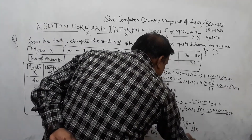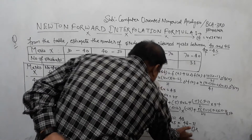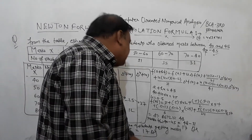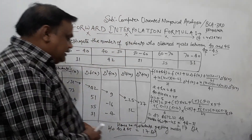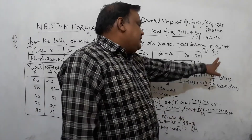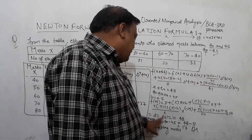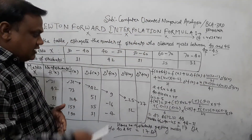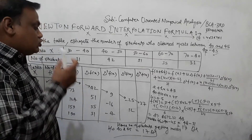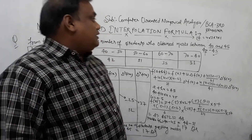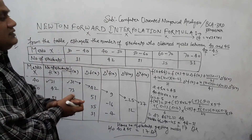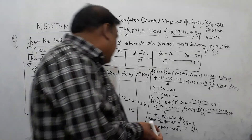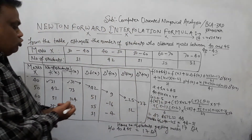So the number of students getting marks between 40 and 45 is 48 minus 31, which equals 17. So the answer is 17 students obtained marks between 40 and 45.